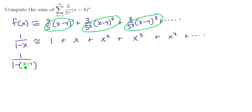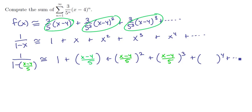So 1 over (1 minus (x minus 4) divided by 5) is going to be 1 plus this expression (x minus 4) divided by 5, plus this expression squared, which is (x minus 4) divided by 5, plus this expression cubed, which is (x minus 4) divided by 5, and on down the line. Here's the fourth, (x minus 4) divided by 5.